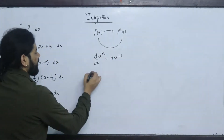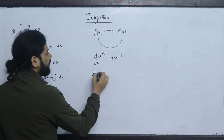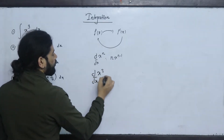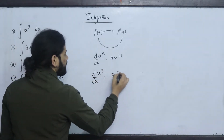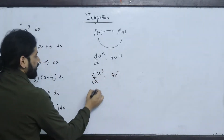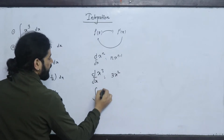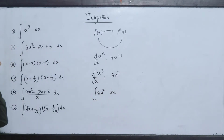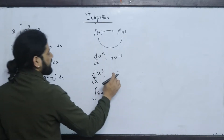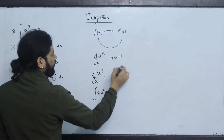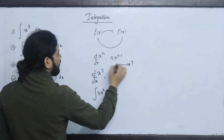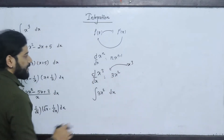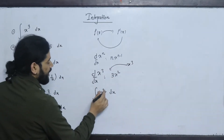The differentiation of x to the power n — the formula is the derivative of x to the power n-1. For example, the differentiation of x to the power n gives x to the power n-1. Now we will solve the integration of x to the power n-1.